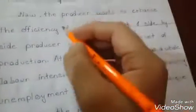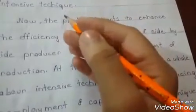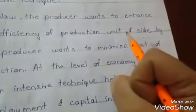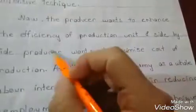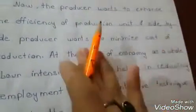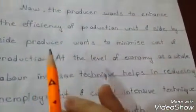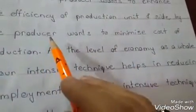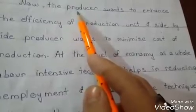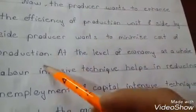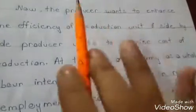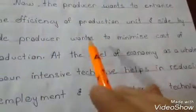The producer wants to enhance the efficiency of the production unit and at the same time wants to minimize the cost of production. The producer prefers more efficiency because greater efficiency leads to more product output, which can increase demand and raise the price of the product. But side by side, the producer also wants cost of production to remain low, which is achieved through labor intensive technique. This creates a problem of choice for the producer — which technique to use, labor intensive or capital intensive.